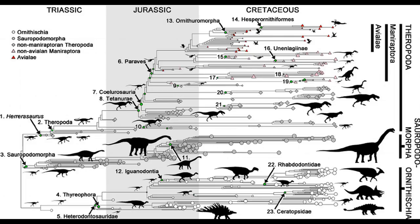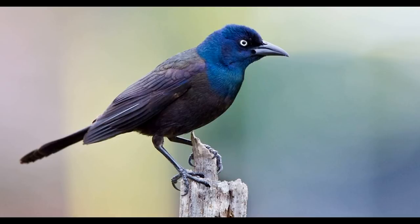Hello everyone, this is the last video of the dinosaur phylogeny series. We have traveled through dinosaur ancestors, sauropodomorphs, ornithischians, and most theropods. Today we are going to finish the theropods, so let's jump right in.